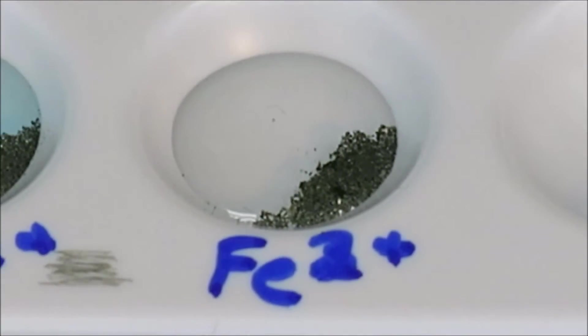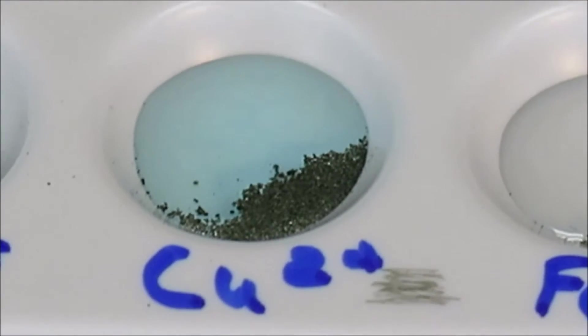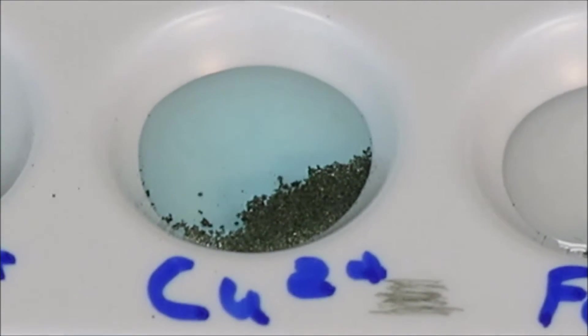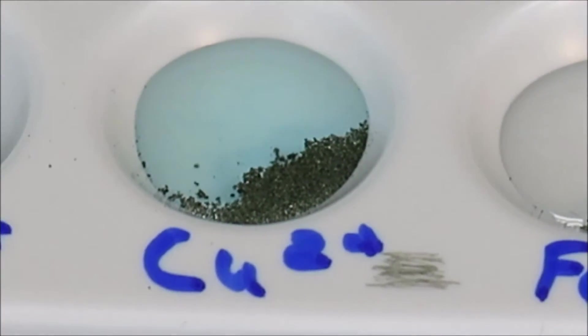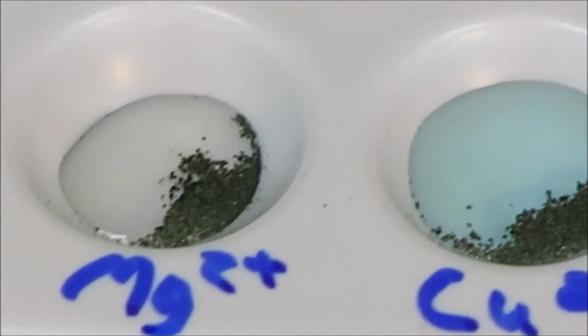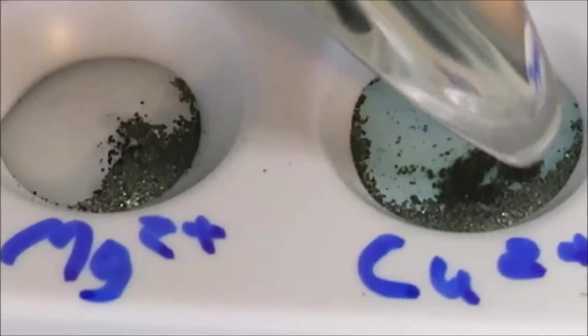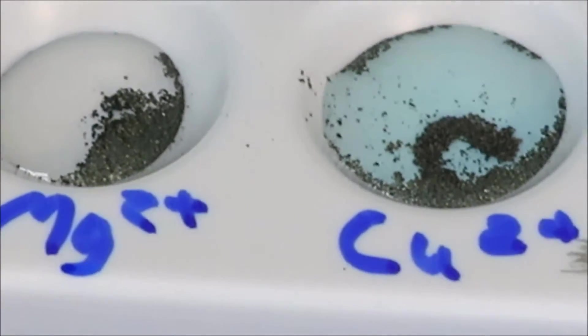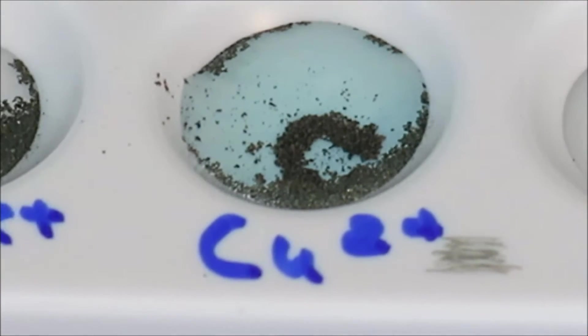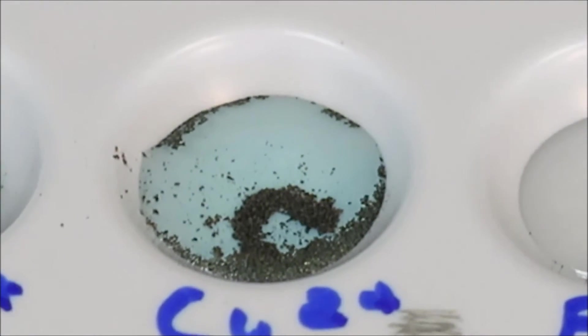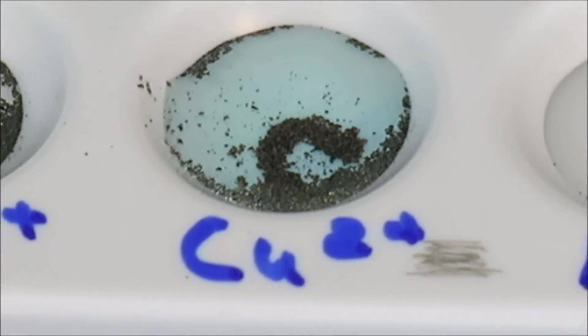The iron does not appear to have any change in its iron ion solution. And in the copper two-plus solution, what we can observe, as I will stir this slightly, because the iron filings tend to float on the surface. What we can observe, if we look at the center of the well there, with the iron that is at the bottom of the well, we can see that it's actually changing color.